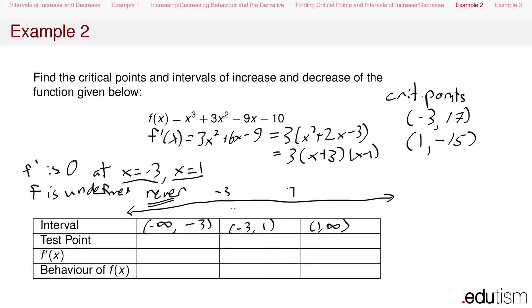Now we pick a test point in each interval. From negative infinity to -3, we could pick -4. From -3 to 1, we could pick 0. And from 1 to infinity, we could pick 2.